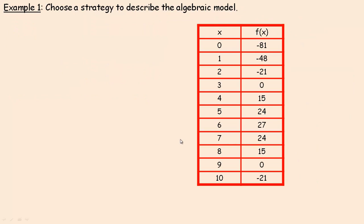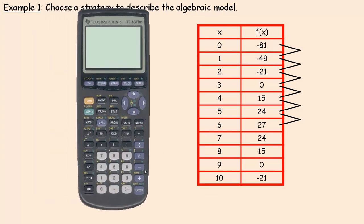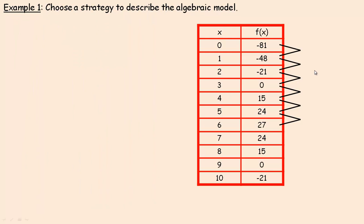Now we'll look at differences to start finding these different functions to model our data. From negative 81 to negative 48 it's gone up by 33. From negative 48 to negative 21, it's gone up 27. From negative 21 to 0 it's gone up 21. Then 0 to 15 has gone up 15, 15 to 24 has gone up 9, and 24 to 27 has gone up 3. First differences are all different, so we know it's not linear.